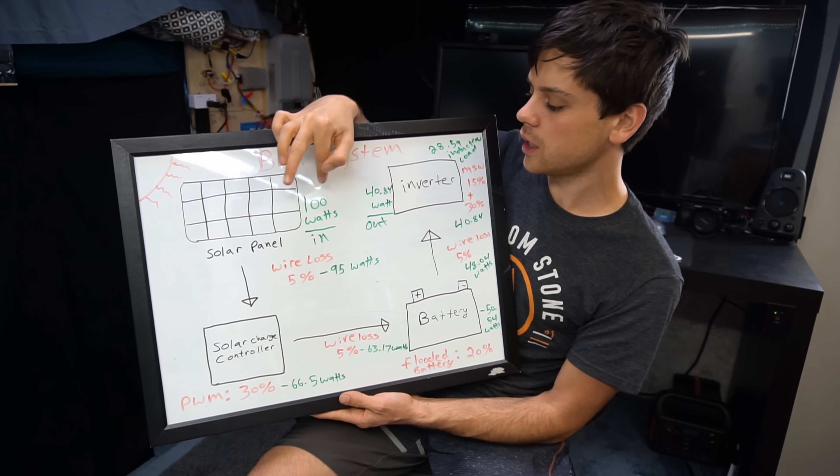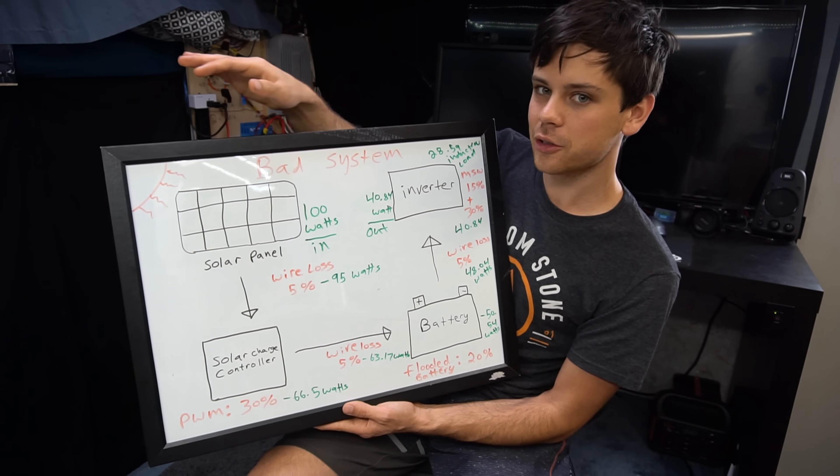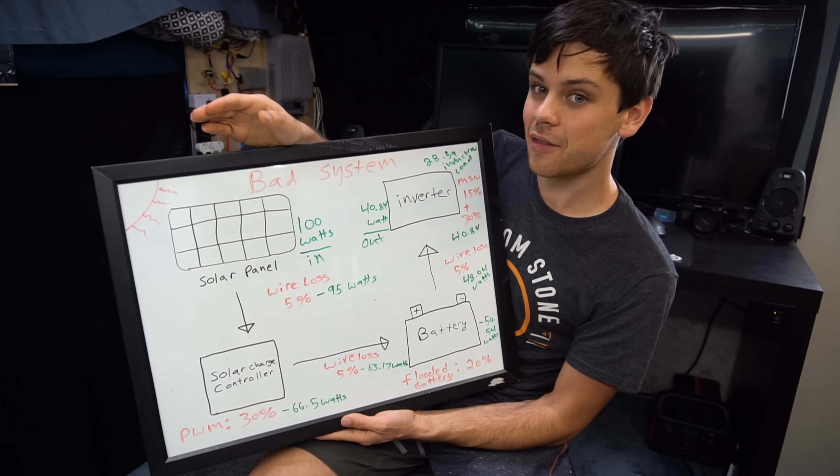100 watts goes in, 40 watts goes out. And also if you have a 100 watt solar panel it's not producing 100 watts. It's usually producing around 70 watts.